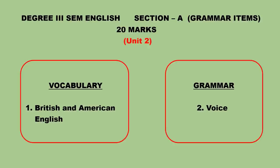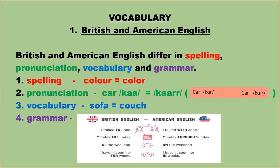To begin with Unit Two, we have British and American English under vocabulary and voice under grammar. British and American English differ in spelling, pronunciation, vocabulary, and grammar.